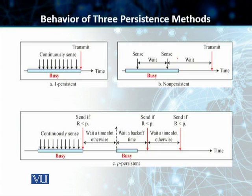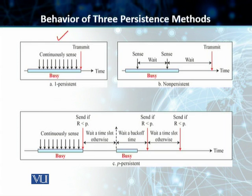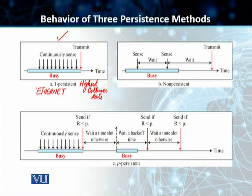One additional concept before we leave CSMA is the persistence method. Persistence methods define what a station should do if the channel is busy or idle. There are three techniques. The first is 1-persistent: after the station finds the line idle, it sends the frame immediately without waiting. This method is the simplest of all but has the highest chances of collision. Notably, the most famous Ethernet LAN technology still uses 1-persistence.